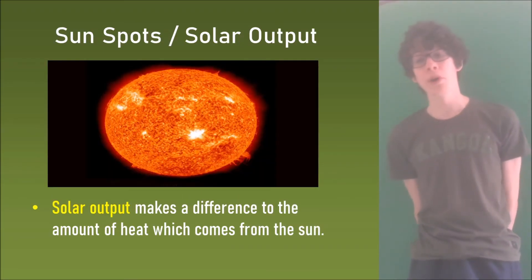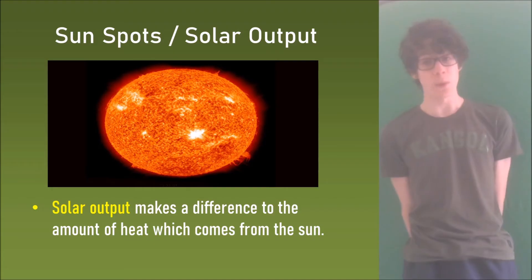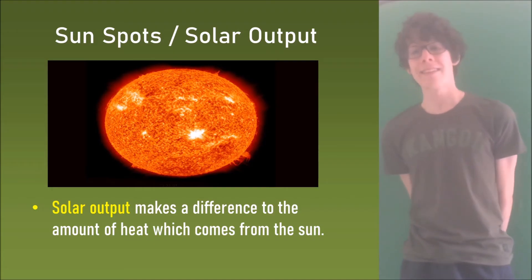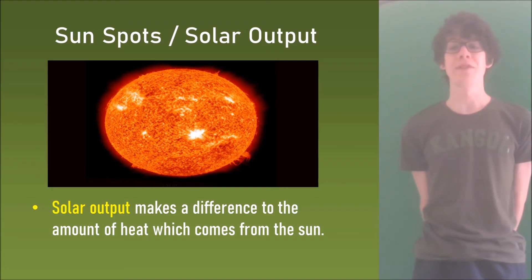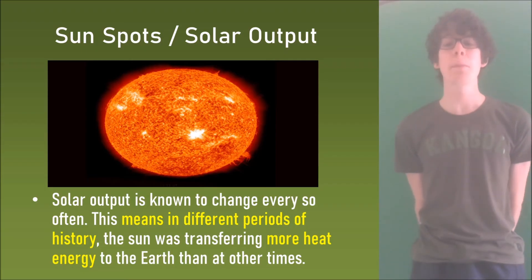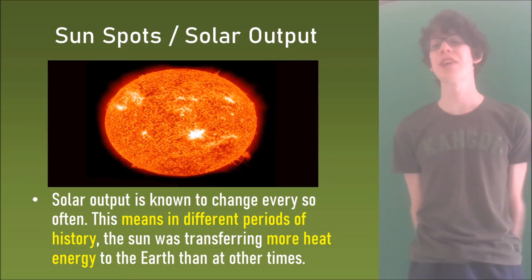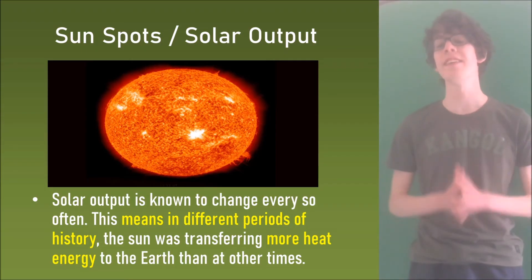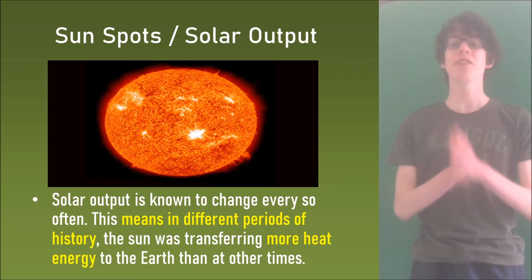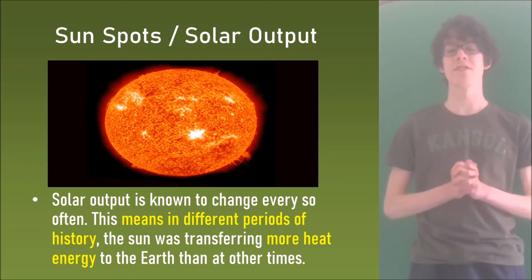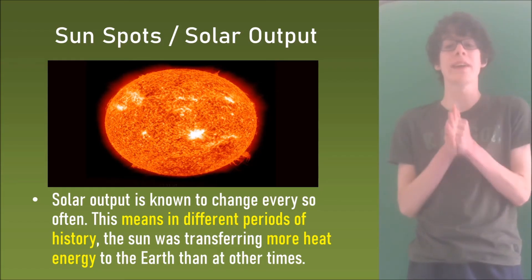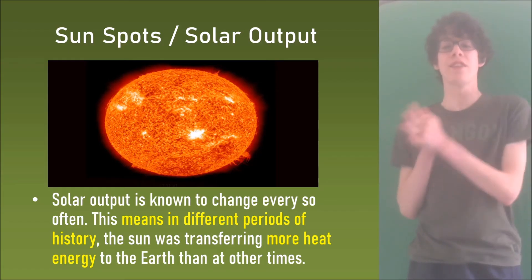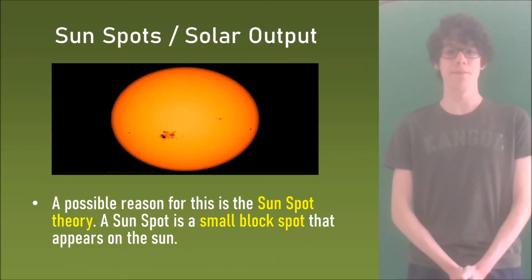Solar output is the third way, and this makes a difference to the amount of heat which comes from the sun. Solar output is known to change every so often, meaning that in different periods of history the sun was transferring more heat energy to the earth than at other times.